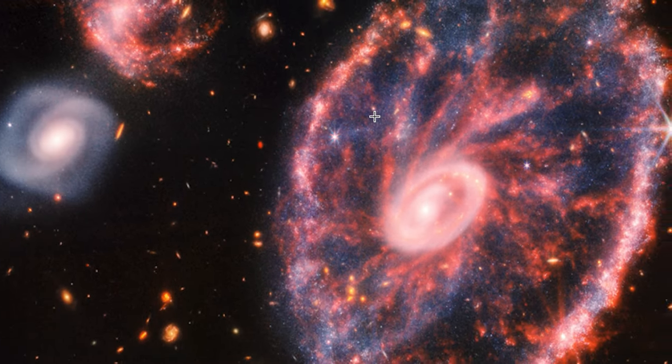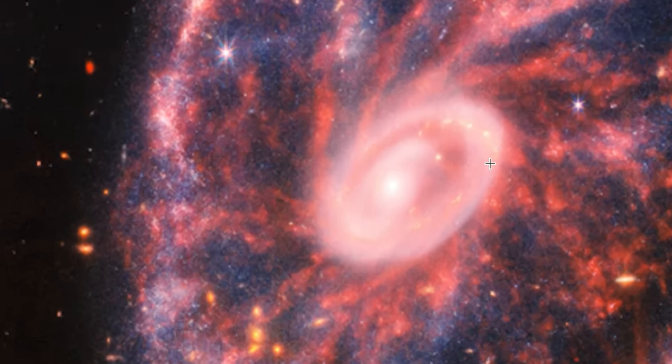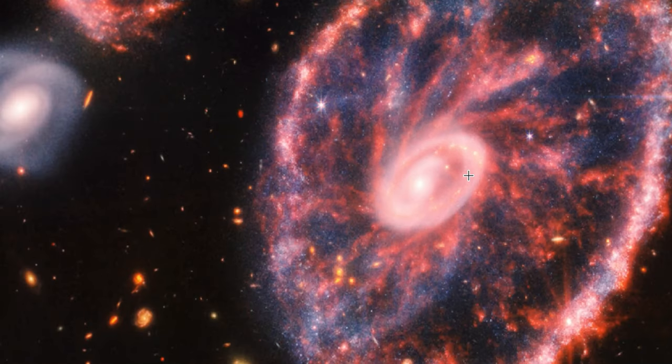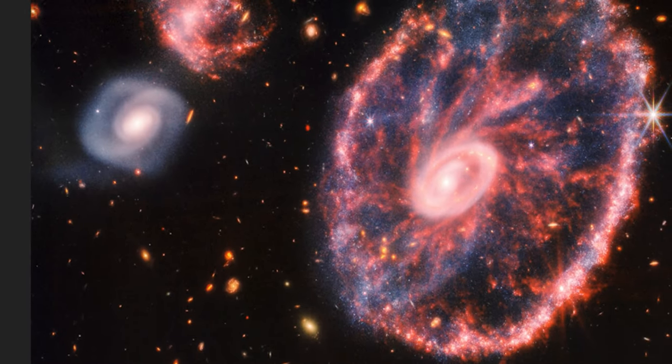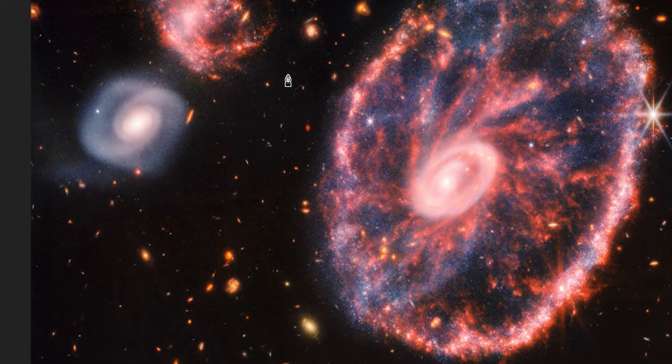Webb's powerful infrared gaze produced this detailed image of the Cartwheel and two smaller companion galaxies against a backdrop of many other galaxies. The image provides a new view of how the Cartwheel galaxy has changed over billions of years.